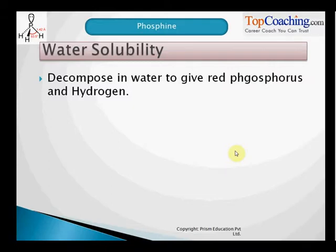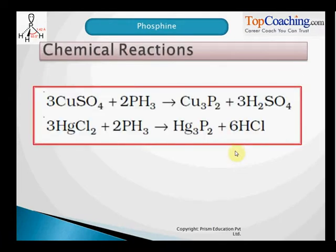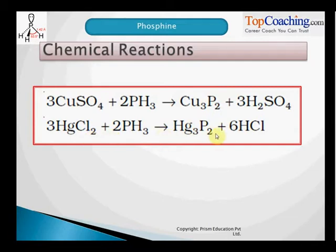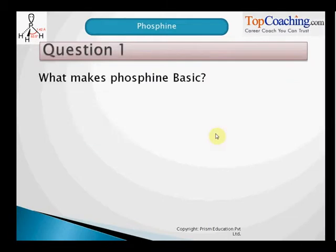As far as its water solubility is concerned, Phosphine decomposes in water to give red phosphorus and hydrogen. It reacts with copper sulfate to give corresponding phosphides — for example, copper phosphide. Similarly, when dissolved in mercury chloride, it gives mercury phosphide.